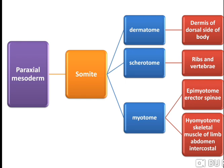The dermis of the dorsal side of the body is derived from the dermatome. Ribs and vertebrae are derived from sclerotome. Myotome differentiates into epimyotome and hypomyotome. Epimyotome gives off the erector spinae. Hypomyotome gives rise to skeletal muscle of the limb, abdomen and intercostal muscles.